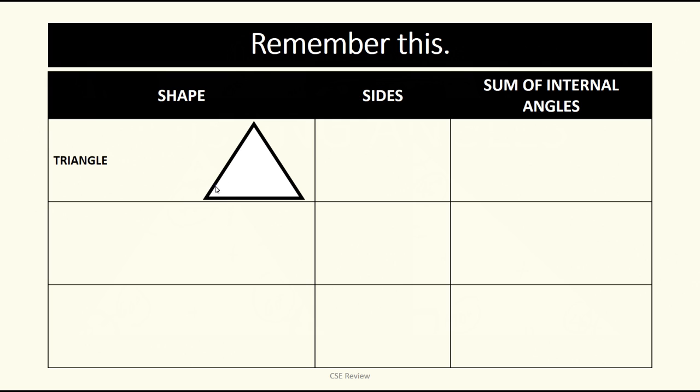We're going to talk about the shapes, the inner sides, and the sum of internal angles na meron sila. Like we talked about kanina, ang triangles, if this is 45, if this is 60, this is 60, this is 60. A triangle has three sides, and ang kanyang sum ng internal angles niya ay 180 degrees.